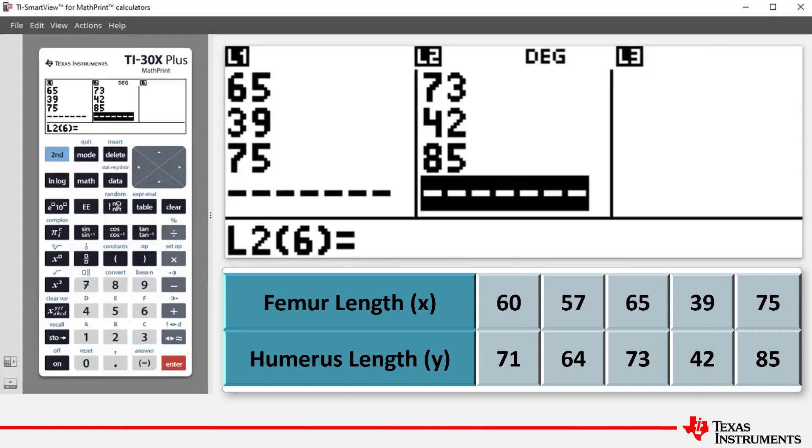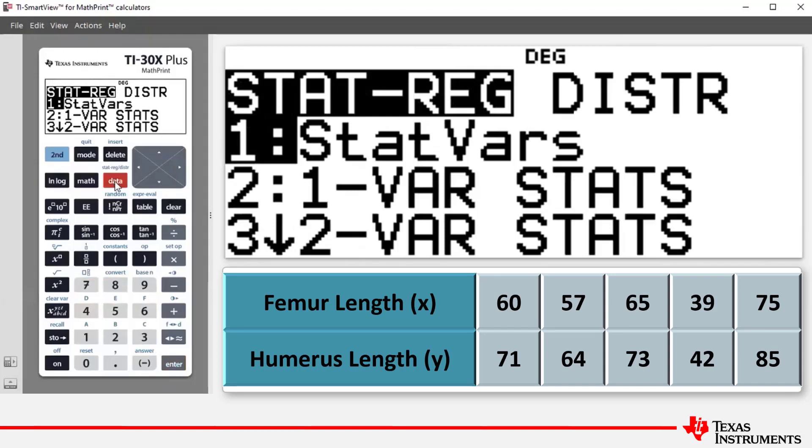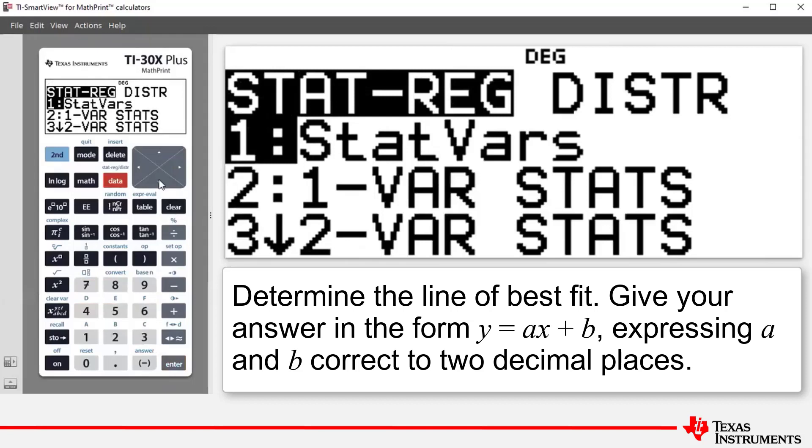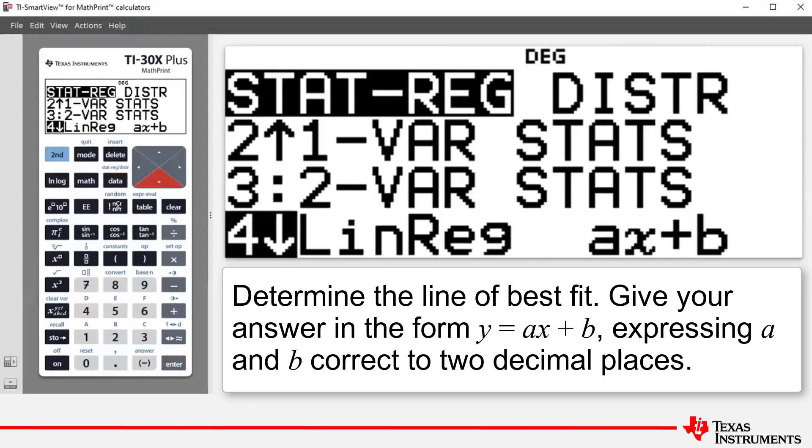So our data is now in the lists and we now have an opportunity to analyze it. So what we do now is to access the stats menu, we press second data. And we are after a command that will find for us the line of best fit. So if we scroll down, we see that number 4, linreg is short for linear regression.